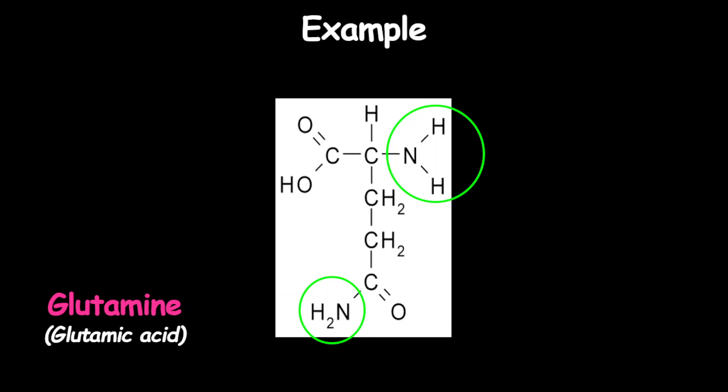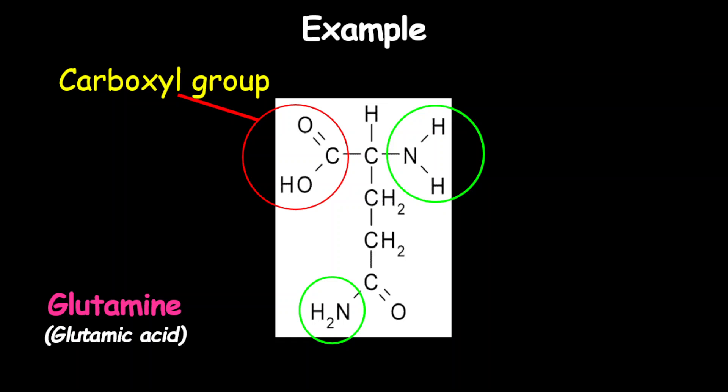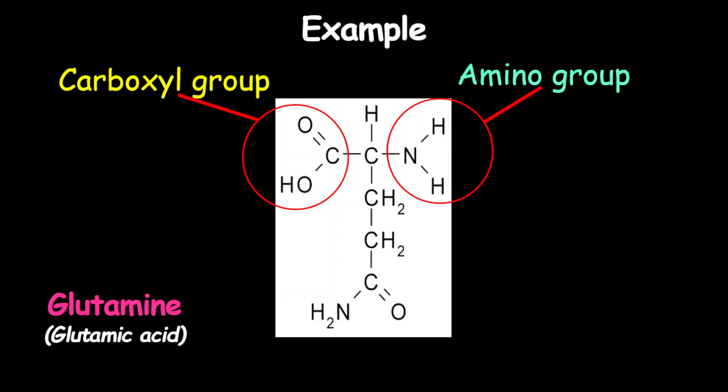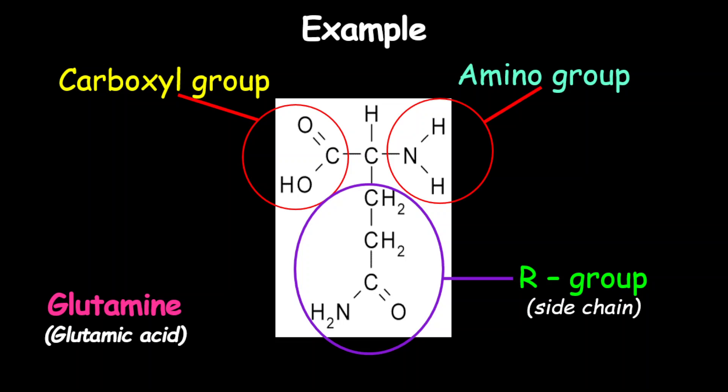An easy way to handle this is to identify the carboxyl group first. Notice the carboxyl group on the left. The carboxyl group and the amino group must connect to the same carbon, so therefore the amino group on the top is the correct amino group — because it connects to the same carbon as the carboxyl group. The remaining portion is the R group. An easy way to remember: the remaining portion is the R group, also called a side chain or side carbon chain.